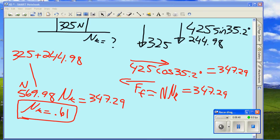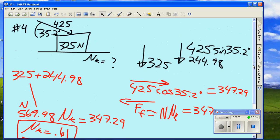Is the block speeding up, slowing down, or no acceleration? No acceleration. And yet, I am pushing it forward at 347.29, 425 cosine of 35.2. So if I'm pushing it forward, shouldn't it speed up? It should speed up, unless there's something pushing it backwards. And what would that be? The force of friction. And so, if I'm not accelerating, that tells me the force of friction exactly cancels my forward force.